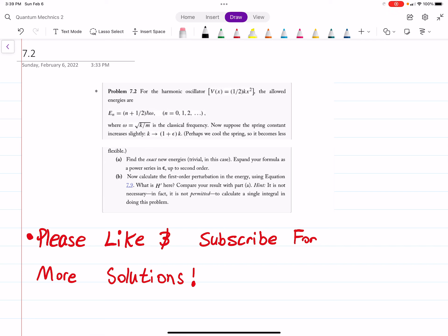This is problem 7.2 on perturbation theory. For the harmonic oscillator with potential V(x) = (1/2)kx², the allowed energies are E_n = (n + 1/2)ℏω for n = 0, 1, 2, where ω = √(k/m) is the classical frequency. Now suppose the spring constant is slightly increased to k' = (1+ε)k. Find the exact new energies and expand your formula as a power series in epsilon up to second order.